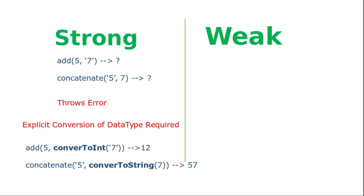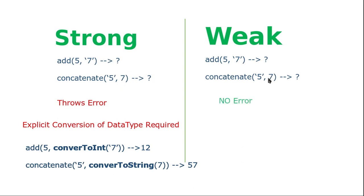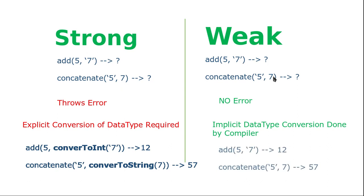Now let's see how a weak typing programming language handles the same situation. Given the same inputs — 7 as a string in the add function, and 7 as an integer in the concatenation function — it will not throw an error and will work perfectly fine. There is a mechanism in weak typing called implicit data conversion, performed by the compiler. The compiler implicitly converts 7 from string to integer, and 7 from integer to string, without explicitly informing the programmer, and produces the desired result.